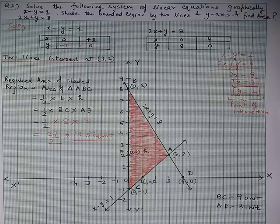A pair of linear equations in two variables will always give us two straight lines. For x − y = 1: when x = 0, y = −1, and when y = 0, x = 1. For 2x + y = 8: when x = 0, y = 8, and when y = 0, x = 4. Plot coordinates (0, −1) and (1, 0) and join them; similarly plot (0, 8) and (4, 0) and join them.